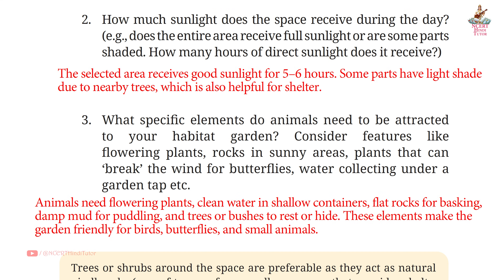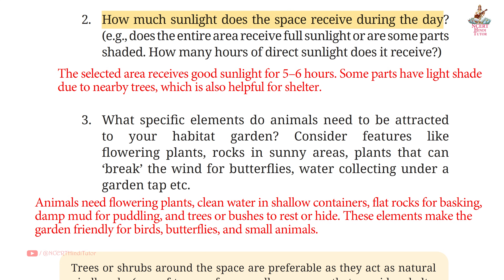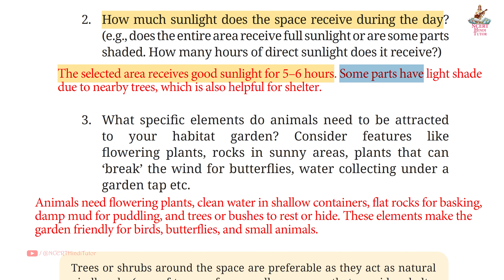Question 2: How much sunlight does the space receive during the day? Answer: The selected area receives good sunlight for 5–6 hours. Some parts have light shade due to nearby trees, which is also helpful for shelter.